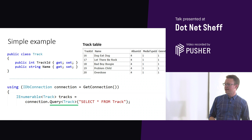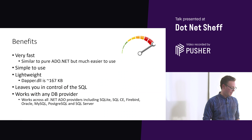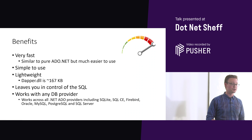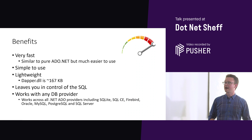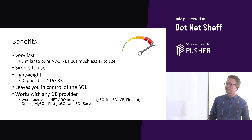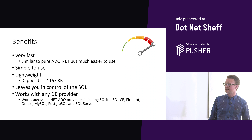The obvious thing to point out compared to Entity Framework is that with Dapper, you have to write your own SQL. So why might you want to use Dapper? For a lot of cases, Entity Framework is the better choice because it has more features and it's easy to use. But Dapper has some benefits worth keeping in mind. It's very fast — about the same performance as straight ADO.NET, but much easier to use. It's very lightweight, less than 200KB for the DLL. It leaves you in control of the SQL. And it works with any database that has an ADO.NET provider, so good coverage of databases.